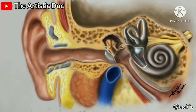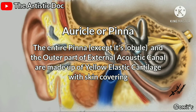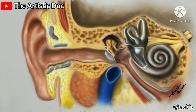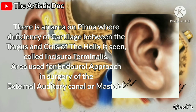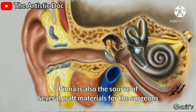Let's start the anatomy of the auricle or pinna. The entire pinna, except its lobule and the outer part of the external acoustic canal, are made up of yellow elastic cartilage with skin covering. There is an area on the pinna where a deficiency of cartilage between the tragus and crus of the helix is seen, called incisura terminalis — used for the endaural approach in surgery of the external auditory canal or mastoid. The pinna is also the source of several graft materials for surgeons.